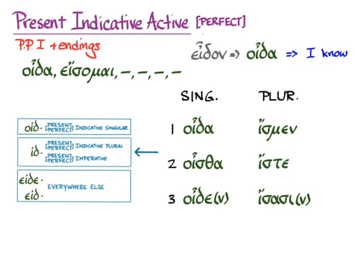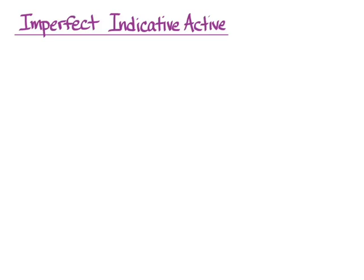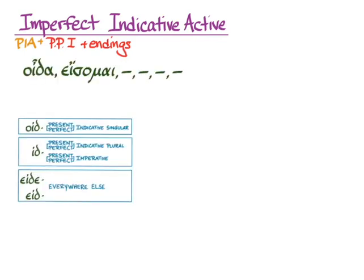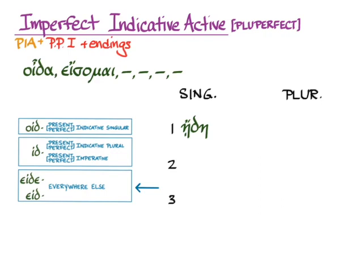Now, in what we would call the imperfect indicative active, we'll have the past indicative augment and endings on that first principal part, but we'll really be thinking about it as the pluperfect. We'll translate it, though, as I knew. So now we need the everywhere else stem, and when we augment that, we get an alpha with an iota subscript at the beginning. So eidein, I knew, or eidea, with that alternate pluperfect ending for I knew.